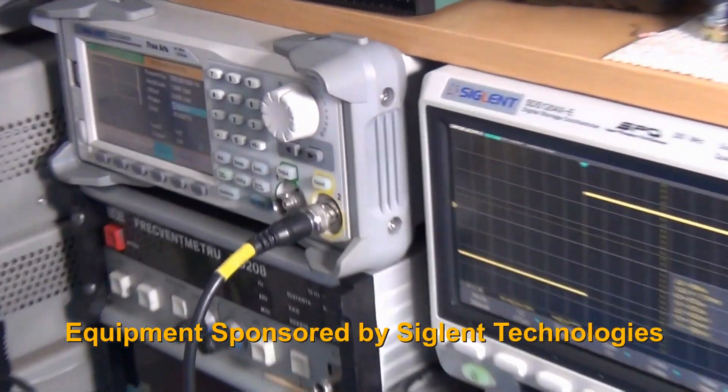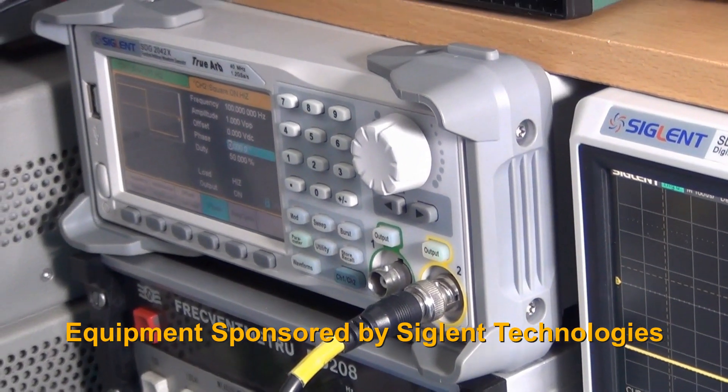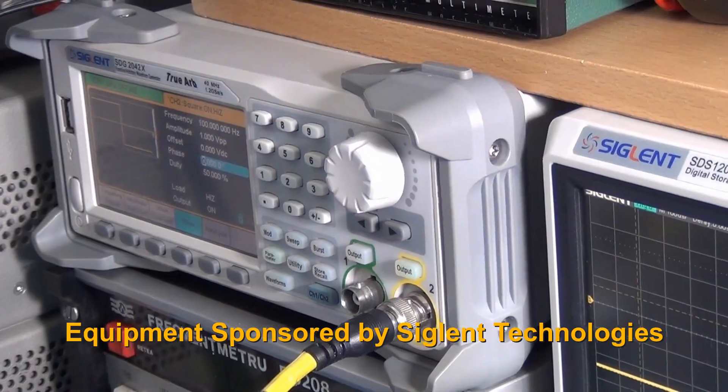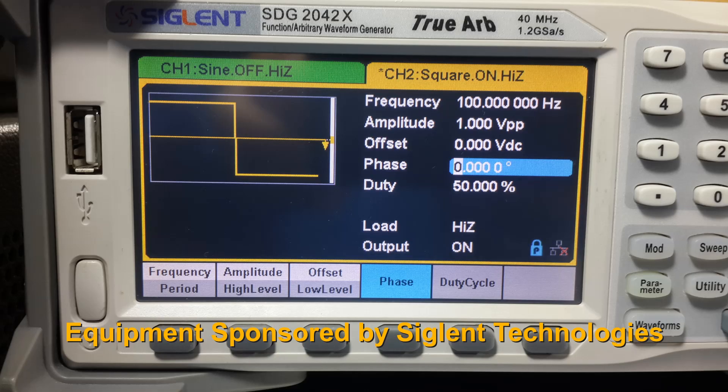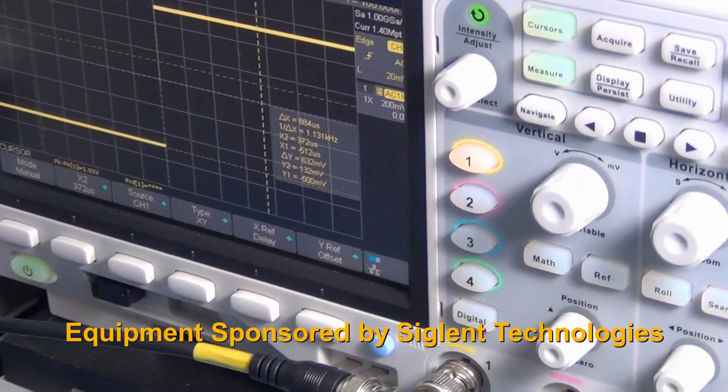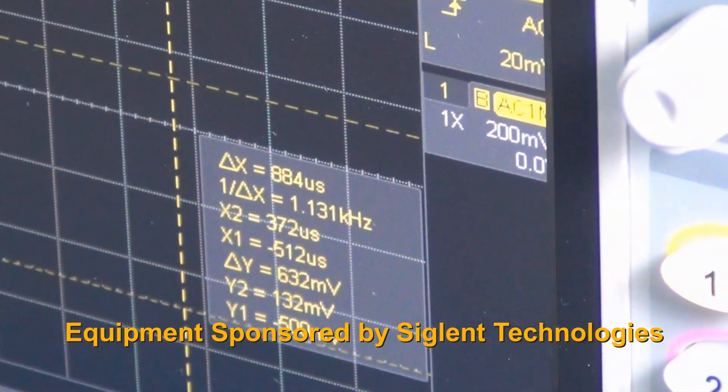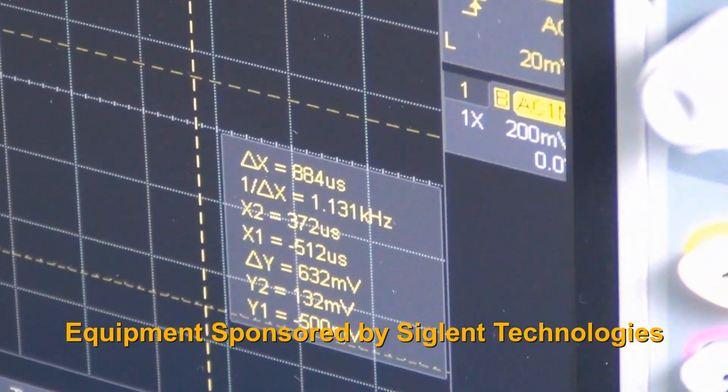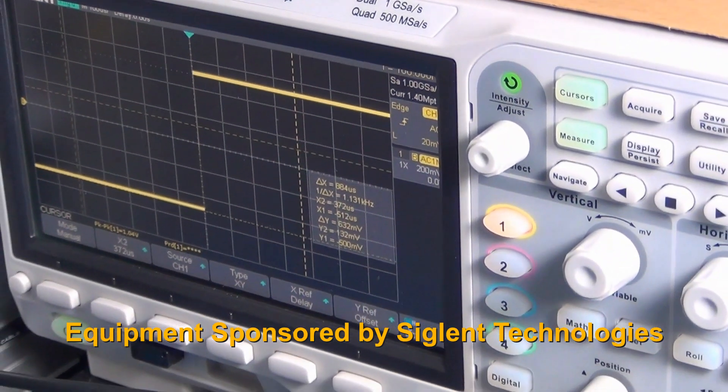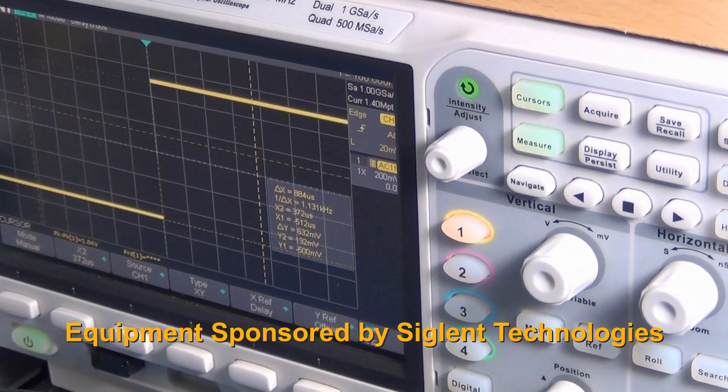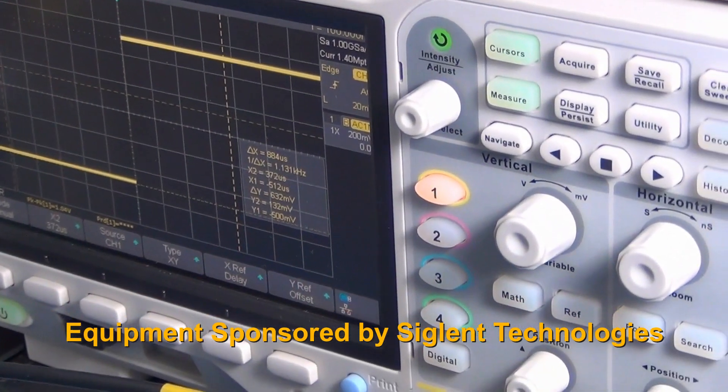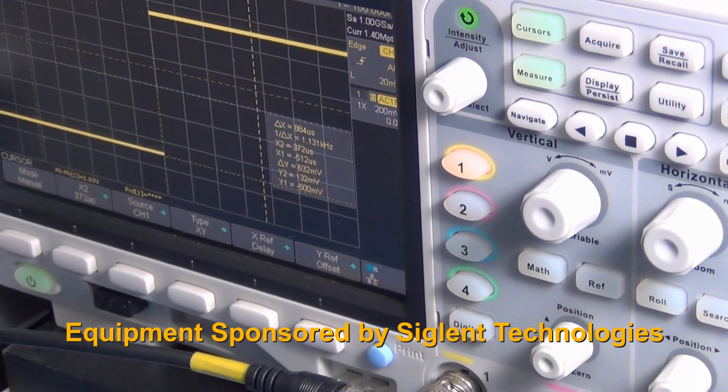For this kind of test, what you need is a very fast rising and falling function generator - 100 Hertz, 1 volt peak to peak - and an oscilloscope. It is good if the oscilloscope has cursors; if not, you have to find manually where your 632 millivolts point is.